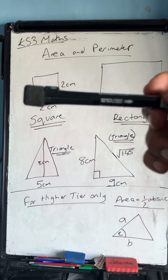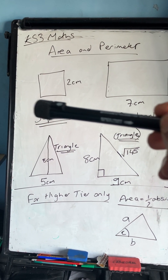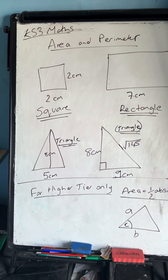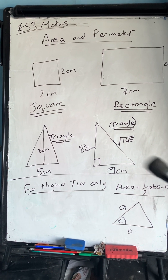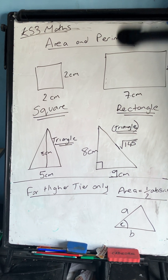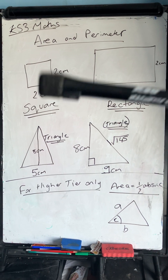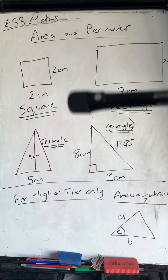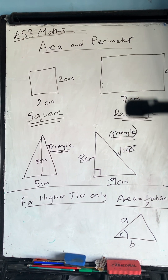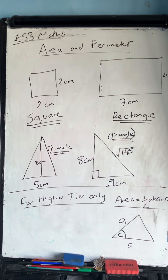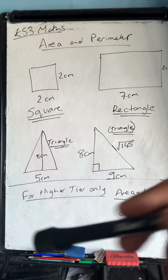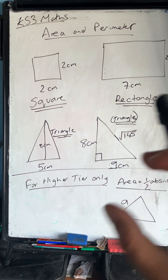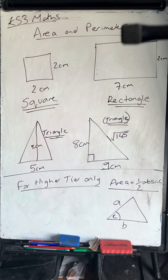The perimeter is the distance around the shape. For a square with side length 2cm, it'd be 2+2+2+2, or four lots of two, giving 8 centimetres. Perimeter is always measured in units — centimetres, metres, millimetres, kilometres, etc. This applies to any shape: a square, rectangle, triangle, circle, or even a compound shape made of bits of circles, rectangles, and squares put together.